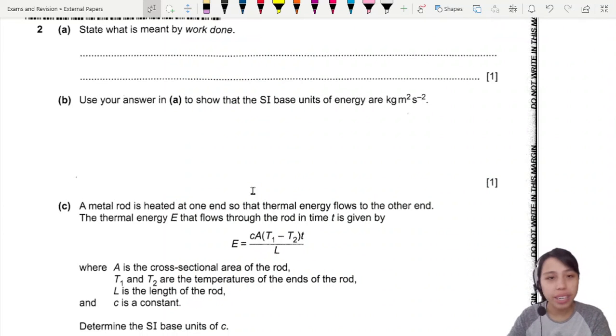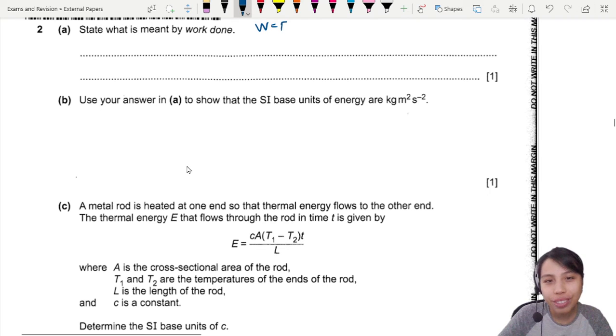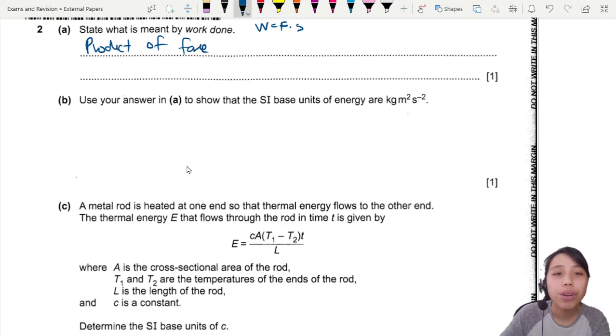States what is meant by work done. Gotta memorize your definitions. So the work done is force times displacement. The original one is actually a vector product, but we don't worry about that. We just stick to our physics definition. So we can say something along the lines of work done is the product of force and displacement.